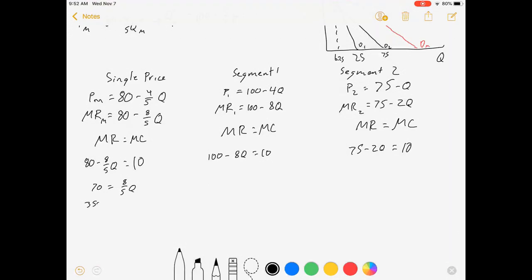What's different is our marginal revenues based on the individual demand curves. So 70 equals eight-fifths Q. Let's see, 350 over 8 equals 43.75, is our monopolist profit maximizing single quantity.